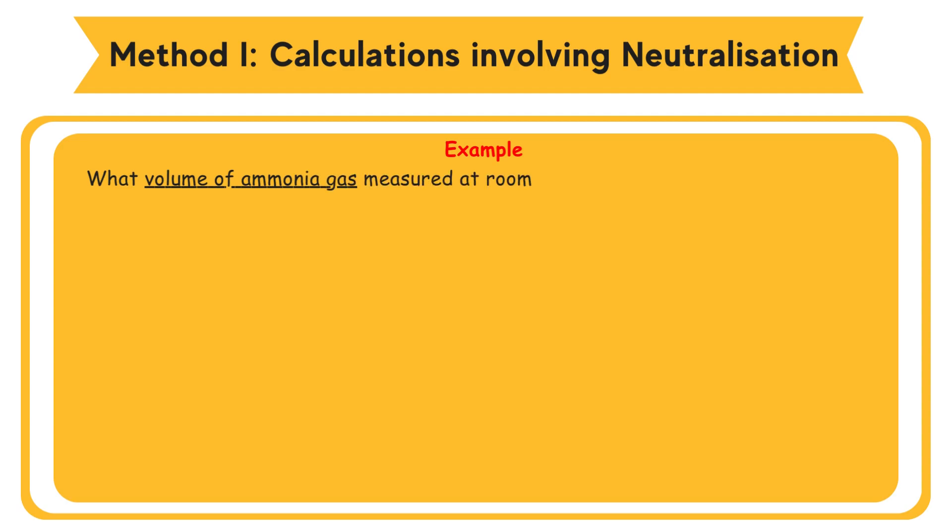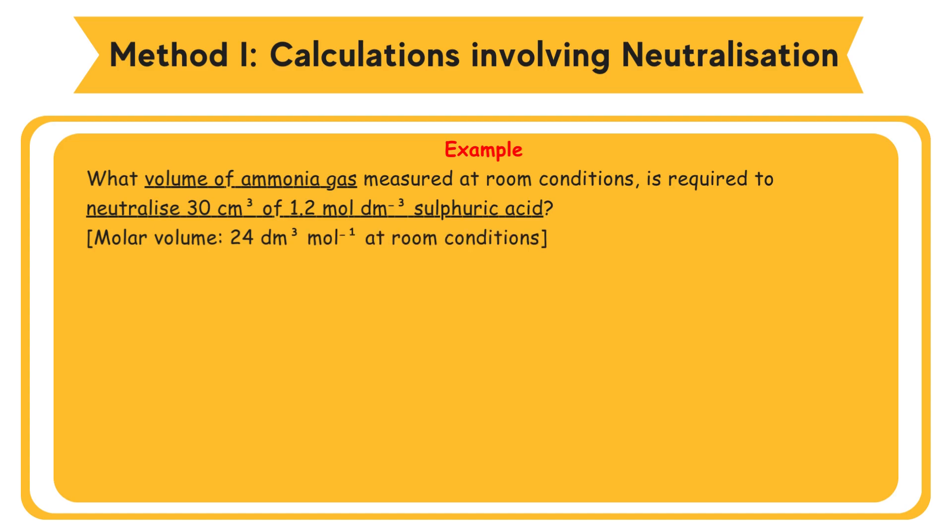Method 1: calculations involving neutralization. Example: what volume of ammonia gas measured at room conditions is required to neutralize 30 cm³ of 1.2 mol/dm³ sulfuric acid? Molar volume: 24 dm³/mol at room conditions. Solution: number of moles of H2SO4 = MV/1000 = 1.2 mol/dm³ × 30 / 1000 dm³ = 0.036 mol.